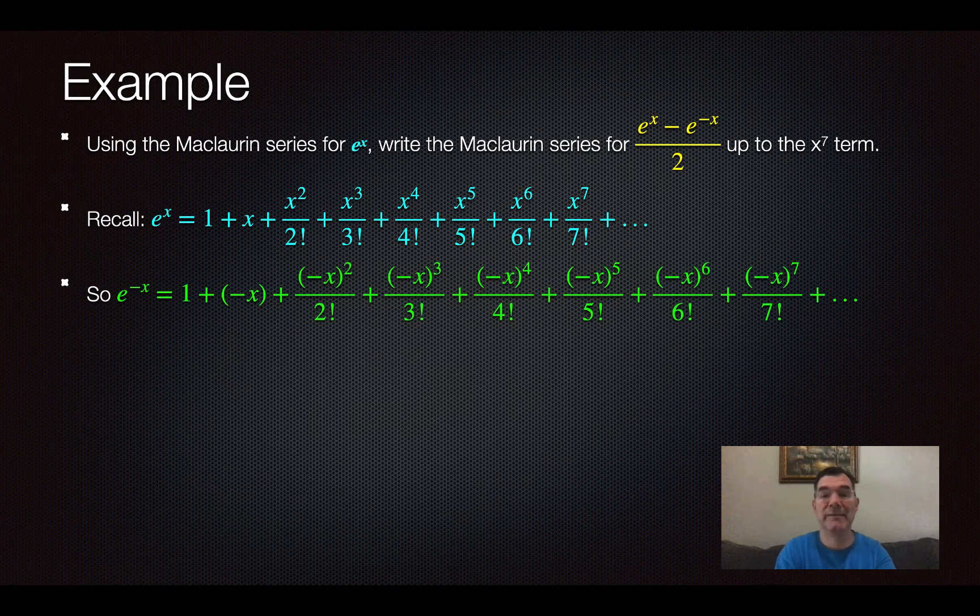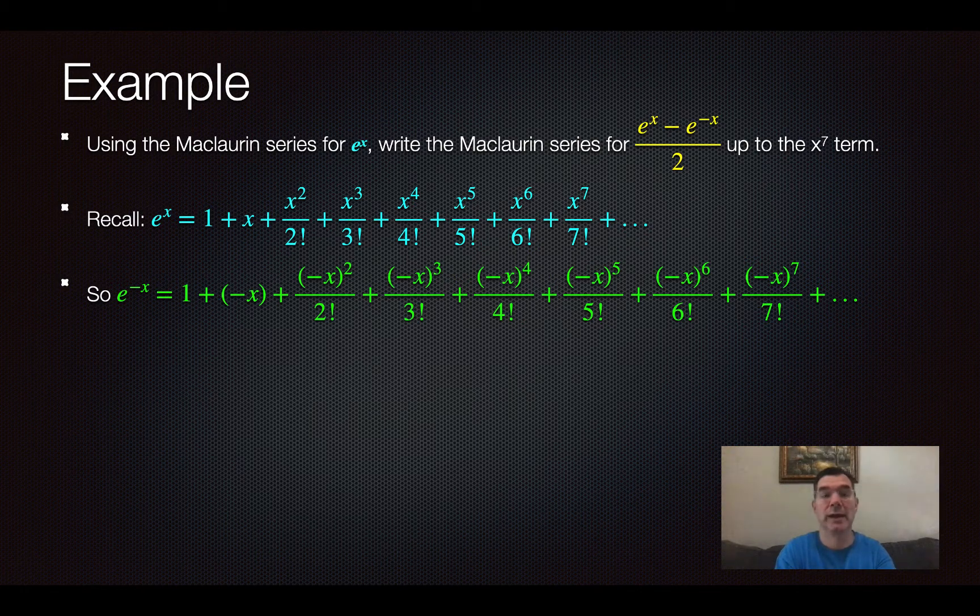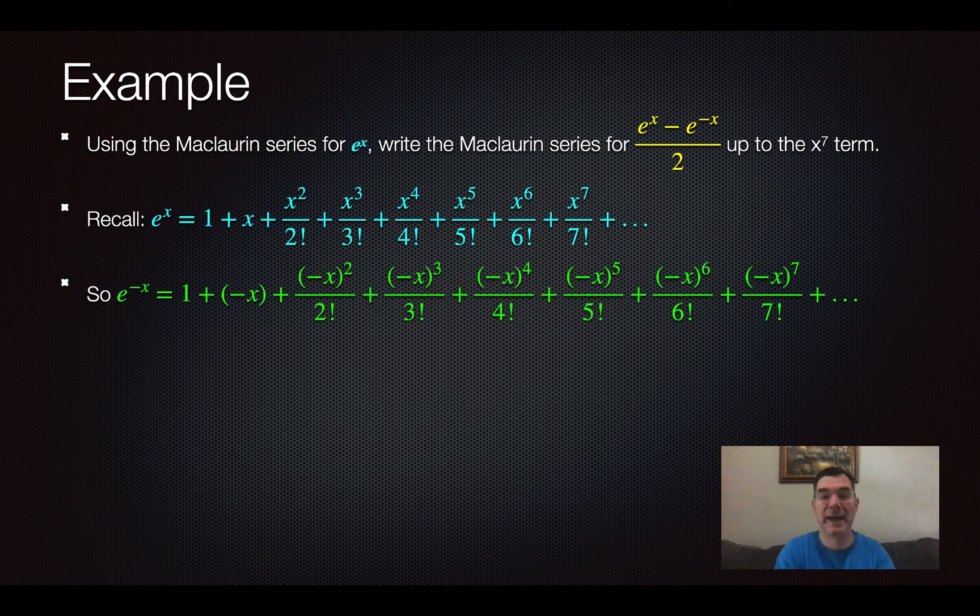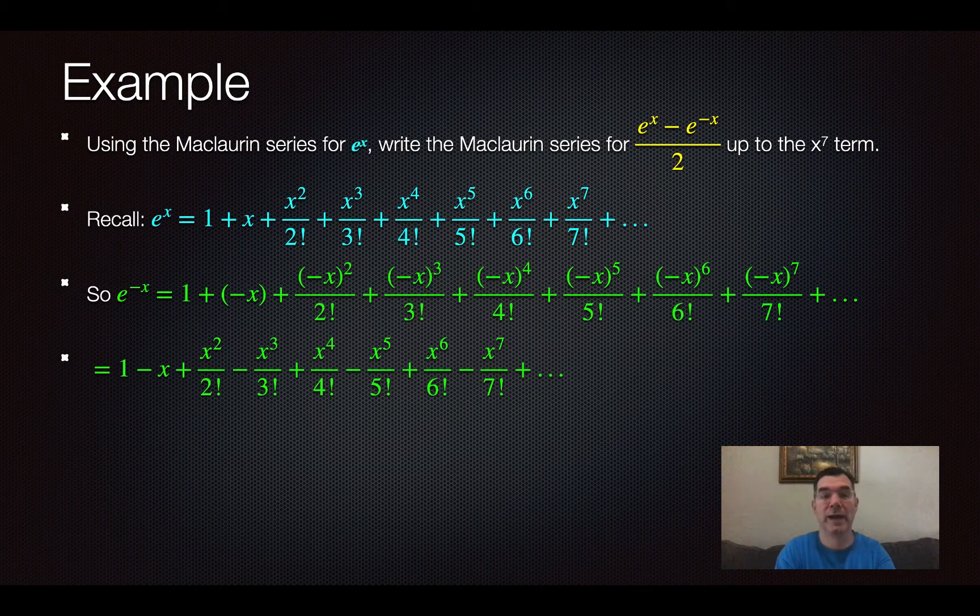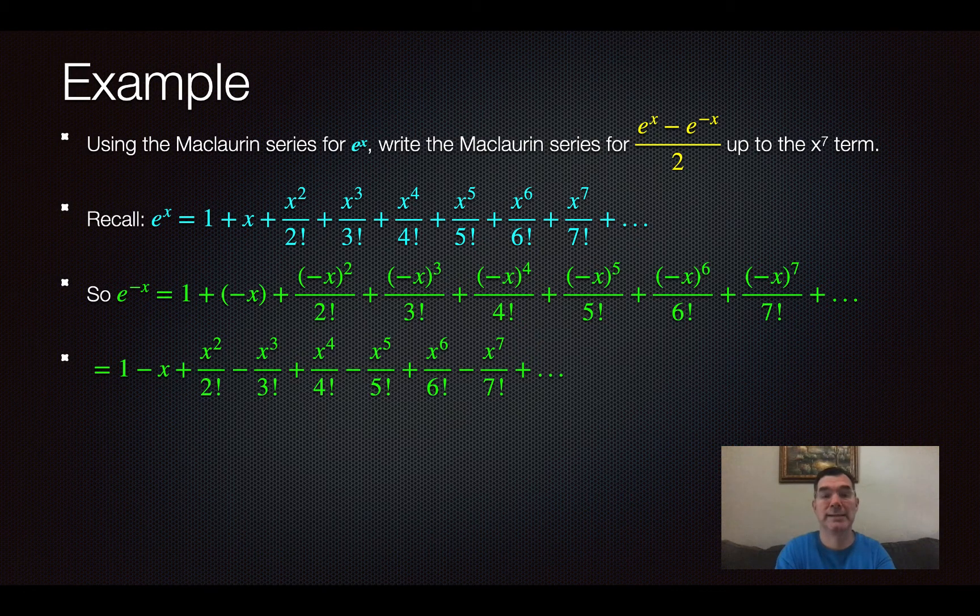e to the negative x, which is the other part of this expression that I need to figure out, is just the same as e to the x, but every x is replaced with negative x. And so if I simplify that, that's what it's going to look like. So I've got e to the x. I've got e to the negative x. I'm going to subtract them and put it over 2 and see what I get.